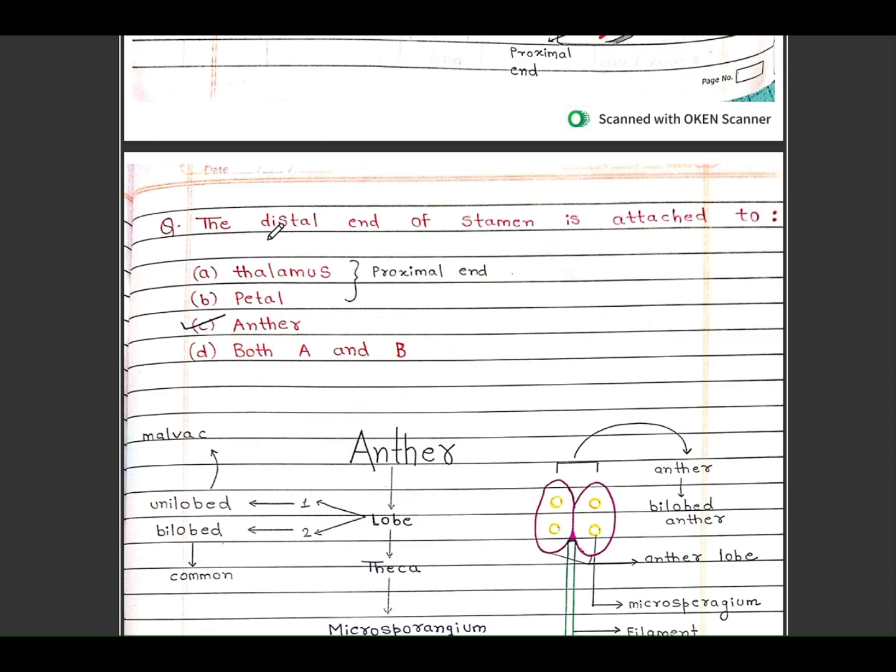Here is the question: The distal end of the stamen is attached to thalamus, petal, anther, or A and B? Answer is anther.